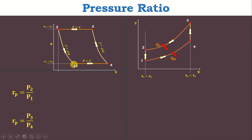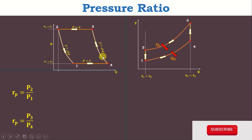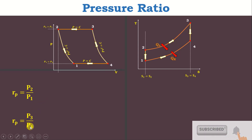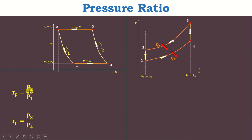Similarly, in the expansion process, it is the ratio between maximum pressure to minimum pressure during expansion, i.e., P3 divided by P4. We know that P2 equals P3 and P1 equals P4, therefore P2 divided by P1 equals P3 divided by P4.